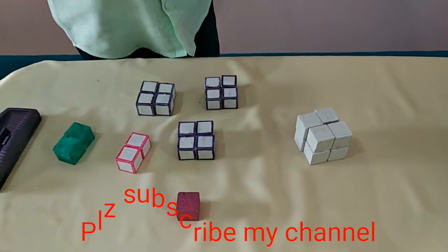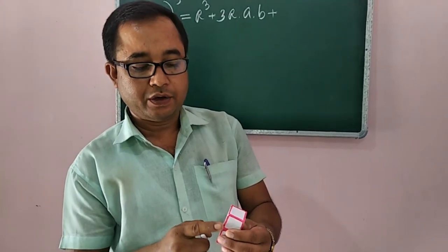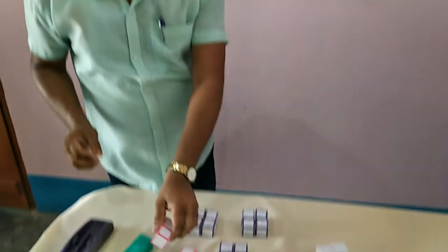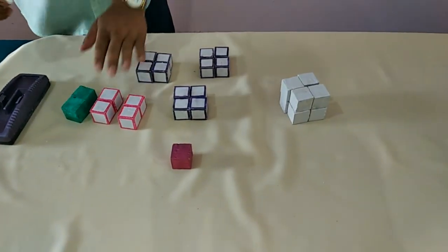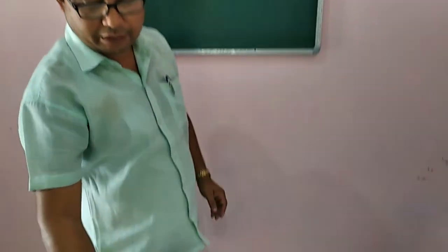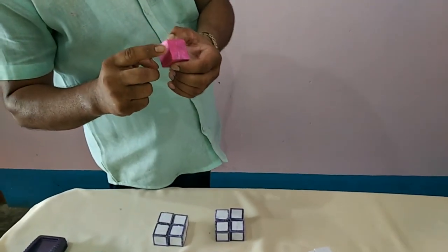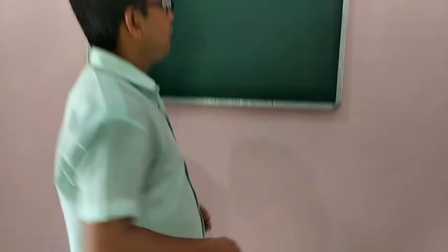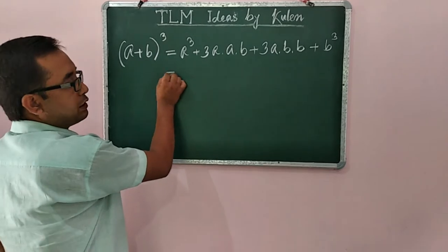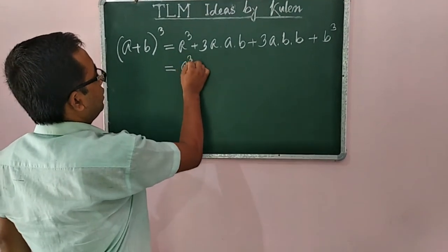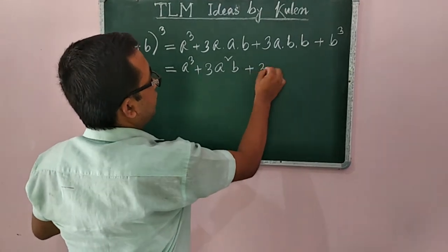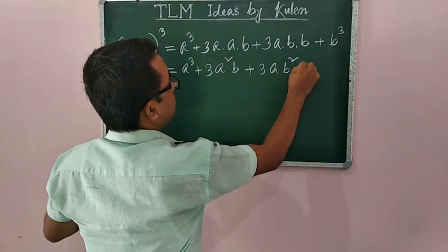Let us take this next portion. This is a cuboid whose length is A, breadth is B, and height is B, so the volume is A into B into B. We found three such equal portions, so we write 3AB². Plus the last one — length B, breadth B, height B — so the volume is B cube. Let us simplify: A cube plus 3A²B plus 3AB² plus B cube.